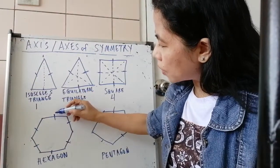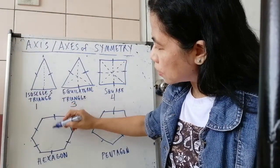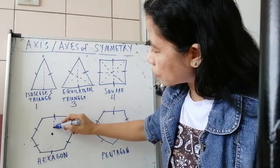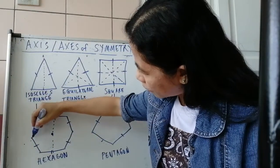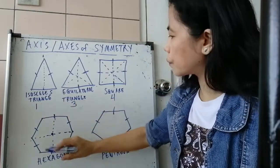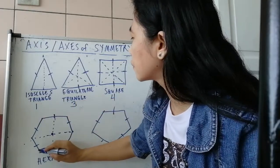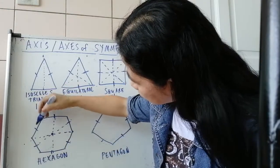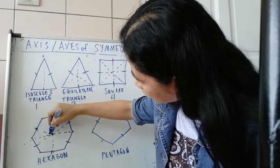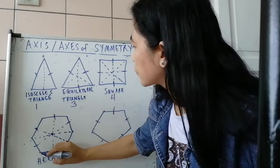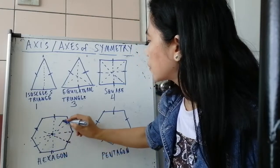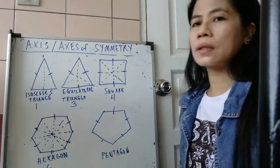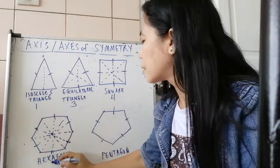So we can draw the line from this. We must draw first a point so that our line must pass through that point. So one, and from here, two, three, four, five, and six. So it has six lines of symmetry.